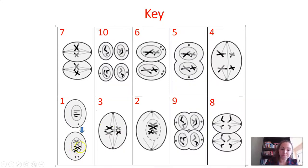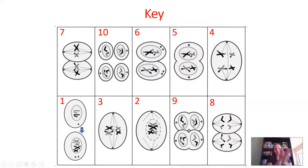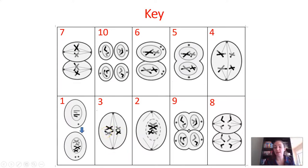Something else has also changed. Looking back at the beginning phase, the replicated chromosomes looked identical to each other. But crossing over — recombination — has now occurred: these chromosomes have swapped some of their parts, so some now have genetic material from the biological mother and some from the biological father.